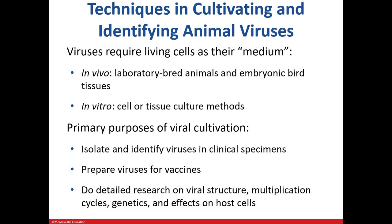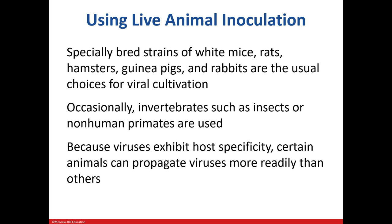So how are viruses grown or cultivated in the lab? It's not as simple as growing up bacteria. Viruses require live cells, because they can't do anything without a host. In vivo methods use animals as well as bird tissues, like chick embryos. In vitro uses cells or tissues. There are many reasons to grow viruses — the big one being to identify the virus causing infections, for vaccine development, and for research. There are a wide variety of animals used, including mice, rats, and rabbits. Sometimes insects and non-primates are used. Specific receptors for the viral spikes determine what animal is used as well.